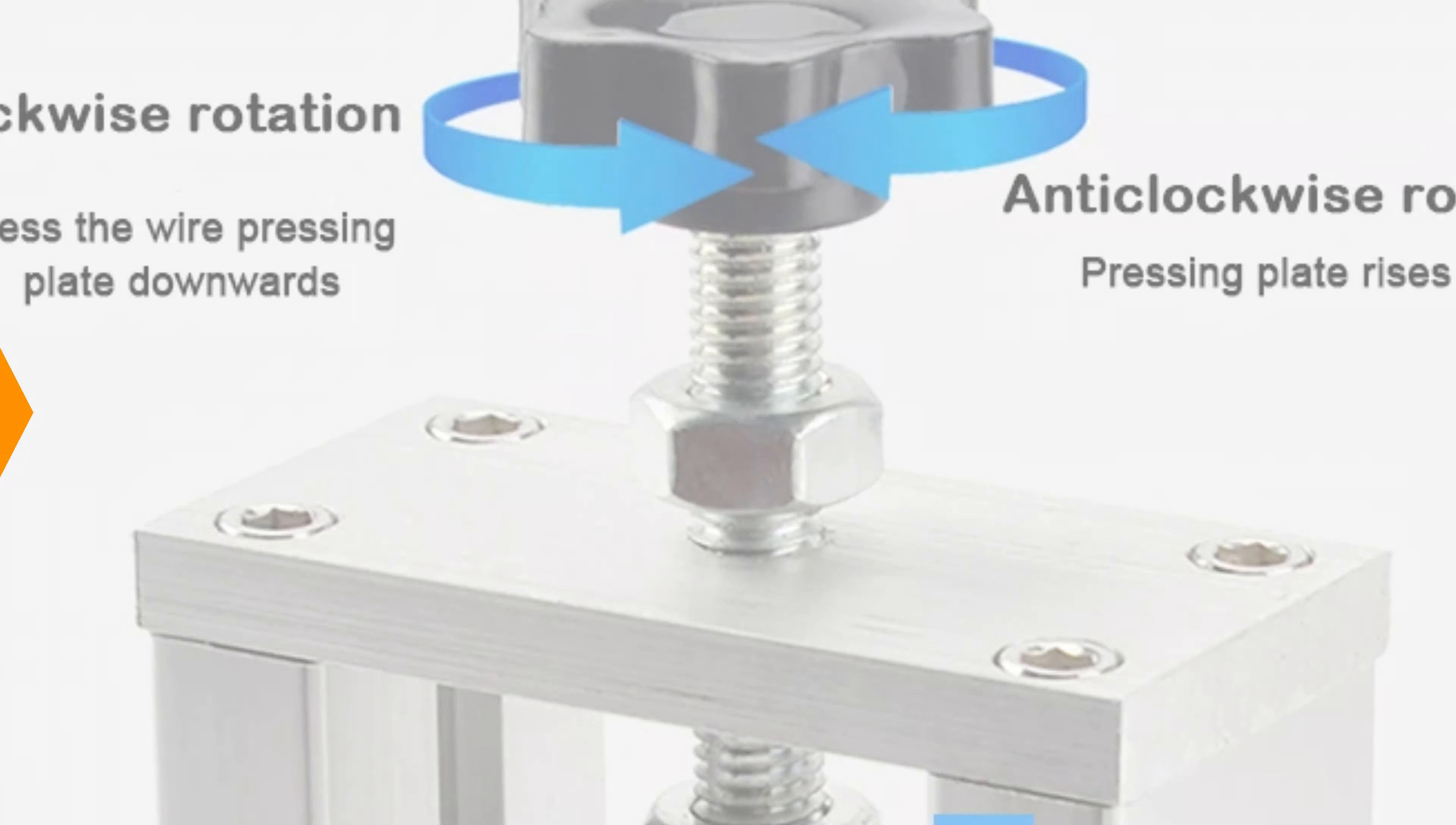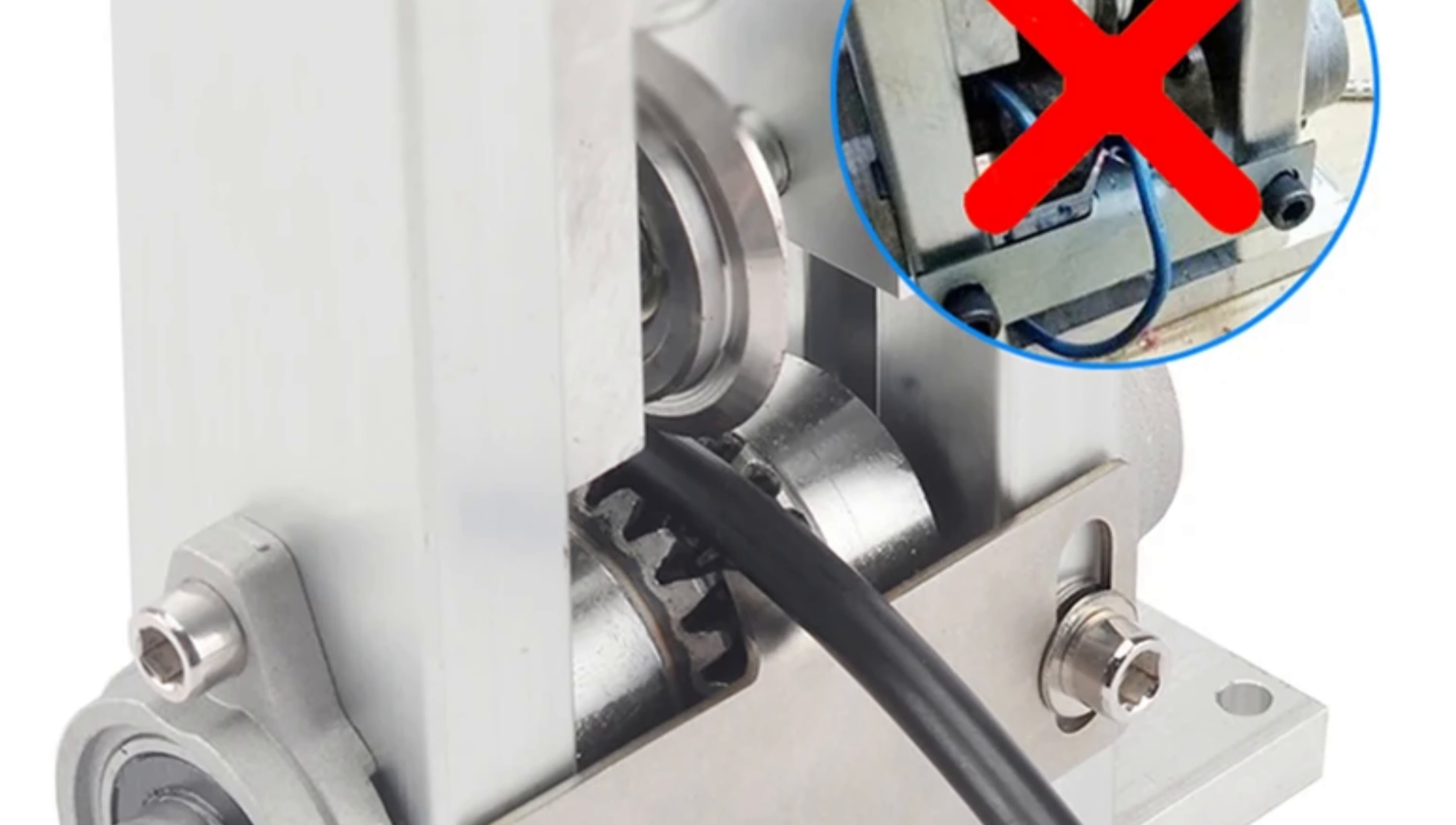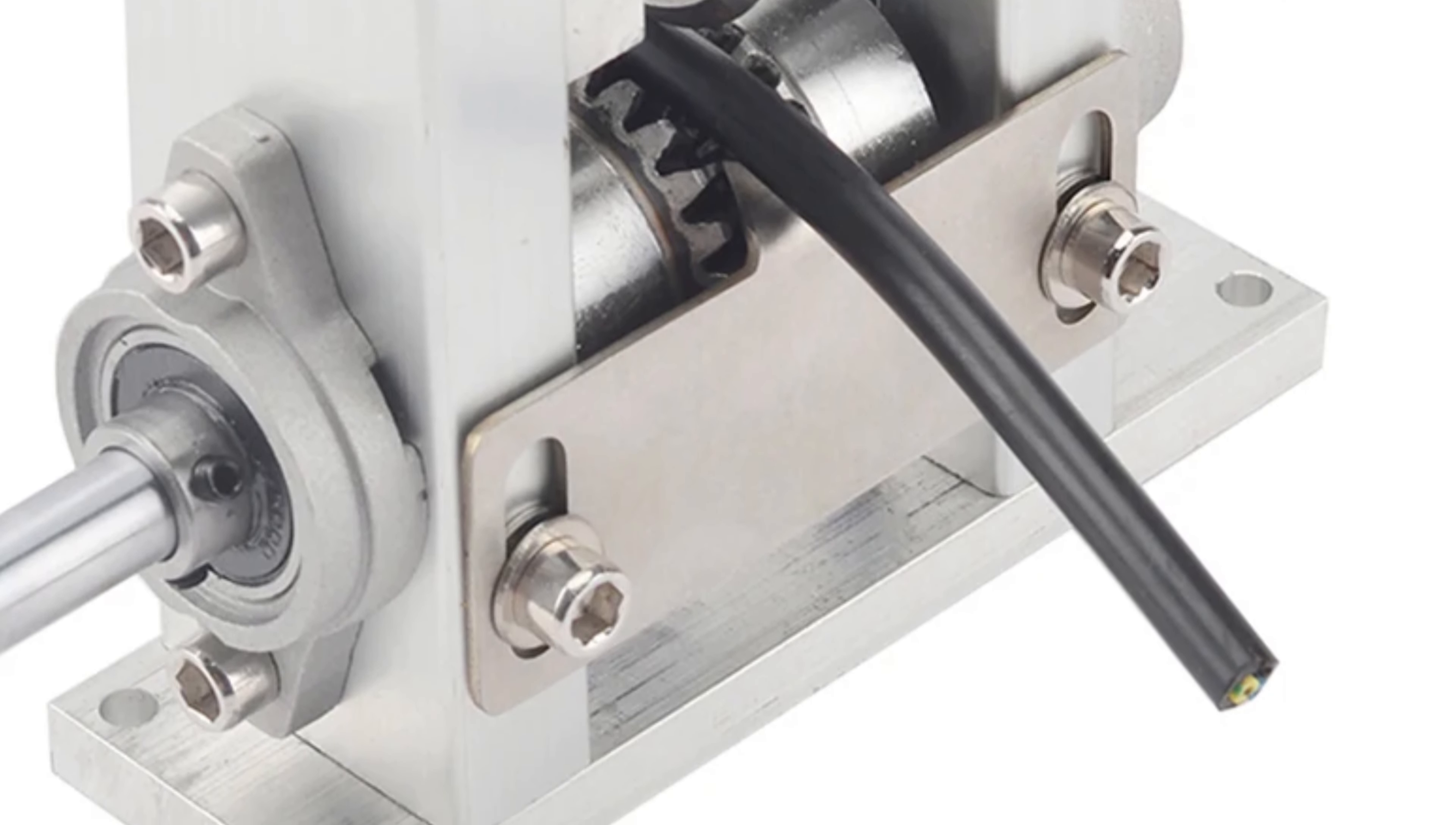The machine's primary function is wire stripping, ensuring clean and accurate stripping, saving time and effort. Say goodbye to manual stripping and hello to a more streamlined workflow with the SDBXJ Wire Stripping Machine.